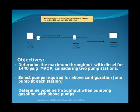The objectives are: first, to determine the maximum throughput possible with diesel fuel, considering 1440 PSI maximum allowable operating pressure, with two pump stations — one at Beaumont and the other at Harvard. Next, we have to select the pumps required for that configuration, one pump at each station. Finally, we need to determine the pipeline throughput when pumping gasoline with these selected pumps.